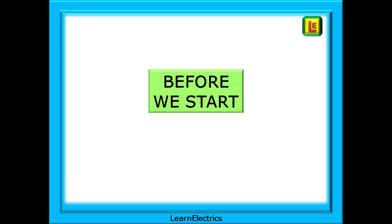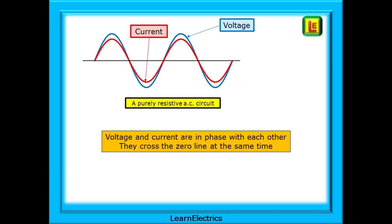Before we start working out VA and power factor, let's look at some basics that will help. In a purely resistive circuit, the current and voltage are exactly in phase with each other. As the voltage crosses the zero line, so does the current. As the voltage peaks, so does the current. They are synchronous with each other.